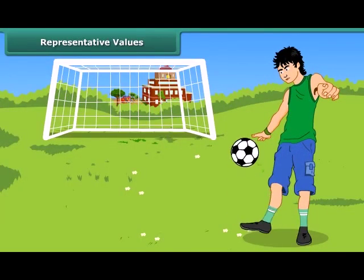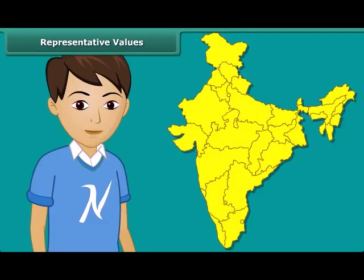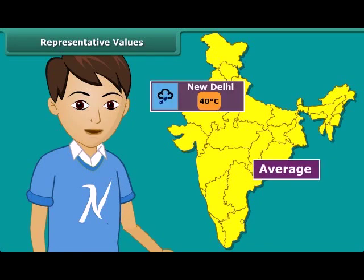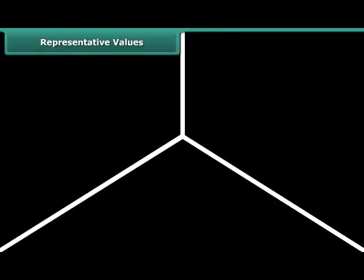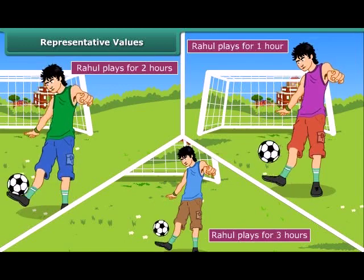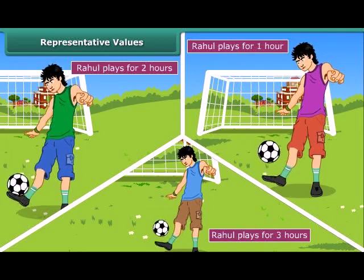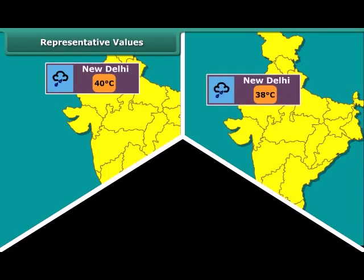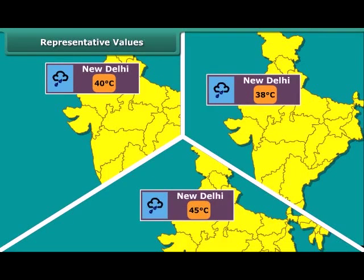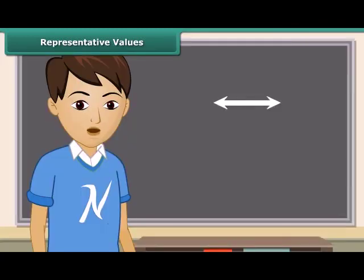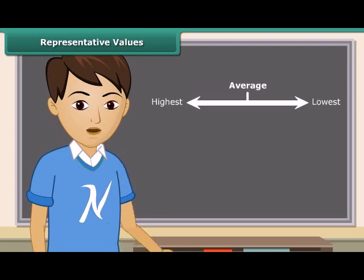Rahul spends on an average of about 2 hours daily for his outdoor games. The average temperature of New Delhi at this time of the year is about 40 degrees Celsius. Have you noticed the word 'average'? By average, we understand that Rahul usually plays for 2 hours — on some days he may play for fewer hours and on other days he may play longer. Similarly, the average temperature of 40 degrees Celsius means the temperature of New Delhi is around 40 degrees Celsius, sometimes less and at other times more. Thus, we realize that average lies between the highest and the lowest value of the given data.